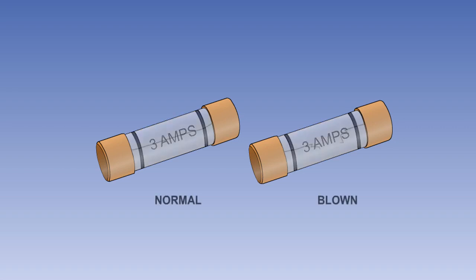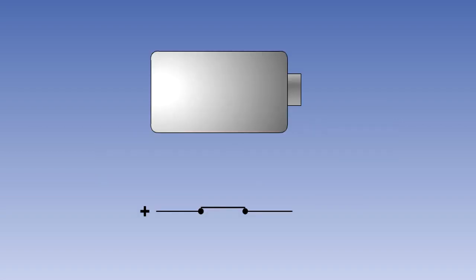A fuse is said to have blown when its conducting element melts. A circuit breaker is said to have tripped when its contacts move apart, breaking the circuit.